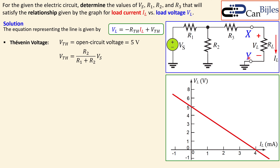The Thevenin voltage between nodes X and Y is also given by the voltage divider rule. Since there is no current flowing in R3, we can ignore it — the voltage drop across it is zero. So the Thevenin voltage is R2 over (R1 plus R2) times VS, and that expression equals five volts. This will be equation number one.